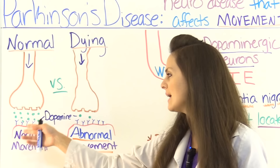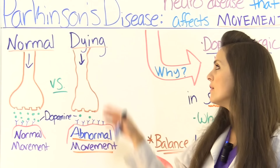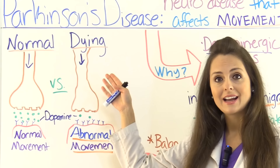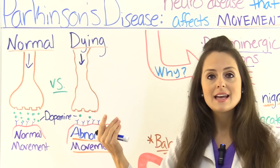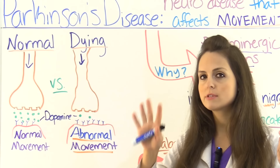However, to contrast it, over here we have a dopaminergic neuron that is dying — it's not very healthy. So because of that it can't release a lot of dopamine. Those receptors are fine, they're there and wanting to take that dopamine, which makes it a little bit different than other neuro diseases we've talked about. The receptors are fine — it's just an issue with the neurotransmitter. So we're getting abnormal movement.